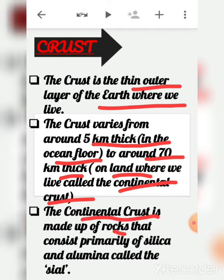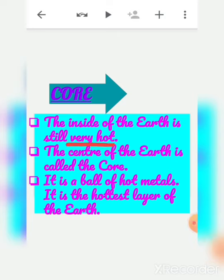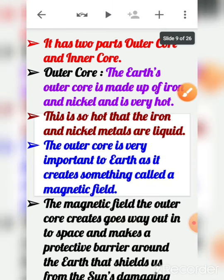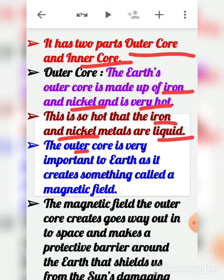The continental crust is made up of rocks that consist primarily of silica and alumina, called the SIAL. The core is the inside of the earth, which is still very hot. The center of the earth is called the core — it is a ball of hot metals and the hottest layer of the earth. It has two parts: the outer core and the inner core. The earth's outer core is made up of iron and nickel and is so hot that these metals are in liquid form.